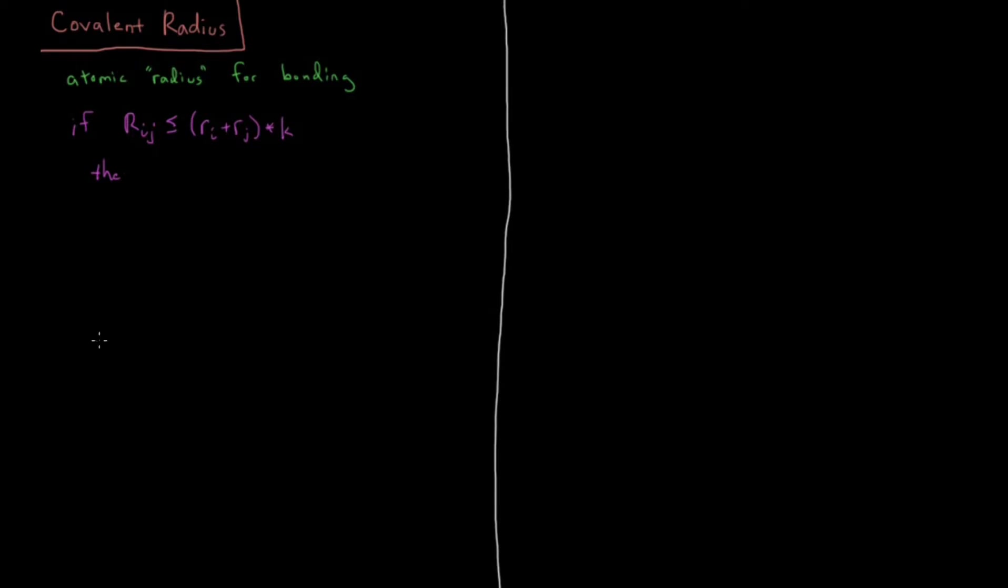That's what we're going to be saying here. This factor k, I could call a threshold factor, which I typically set to be a value of about 1.2.